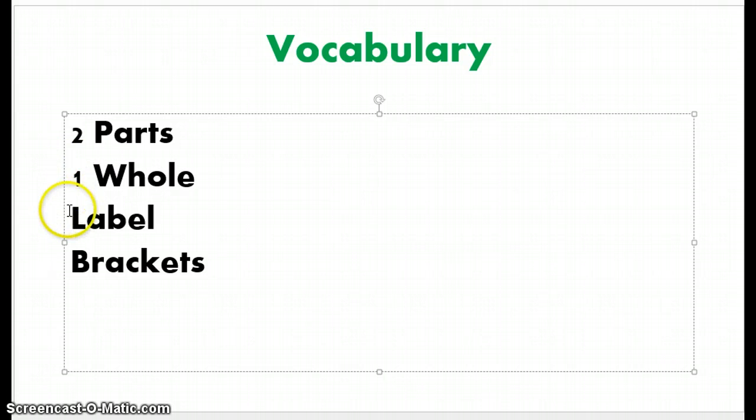The next word is label. In a bar model, you always have to label everything. You have to label the bars with words, or with numbers, or with question marks. But everything needs to be labeled.